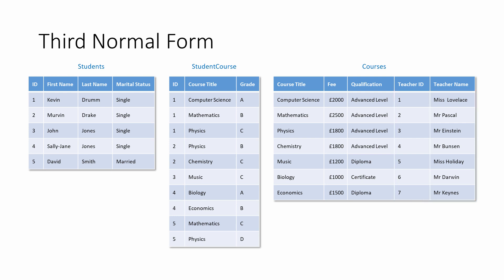If you change one of the course titles, it becomes a different course, so again you need to change the teacher ID and the teacher name. To put this in technical jargon, the teacher ID is functionally dependent on the course title, and the teacher name is functionally dependent on the teacher ID. So there's a transitive dependency between the teacher name and the course title. It's also true that the teacher name is functionally dependent on the course title and the teacher ID is functionally dependent on the teacher name, so there's a transitive dependency between the teacher ID and the course title as well. Whichever way you look at them, there are transitive functional dependencies here, so the courses table violates third normal form.